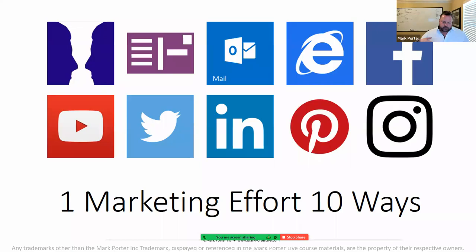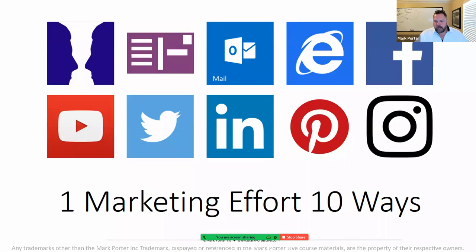Marketing one effort ten ways means we're not necessarily worried about the fact that we don't use Twitter, but we're going to post to Twitter because it's the consumer's preferred method. These consumers usually have one preferred method — there's a generation on Facebook, and a different generation, maybe millennials, on Instagram. It doesn't matter what I like; it matters what the consumer likes. So I'm going to create a marketing piece and put it out there in ten different ways.